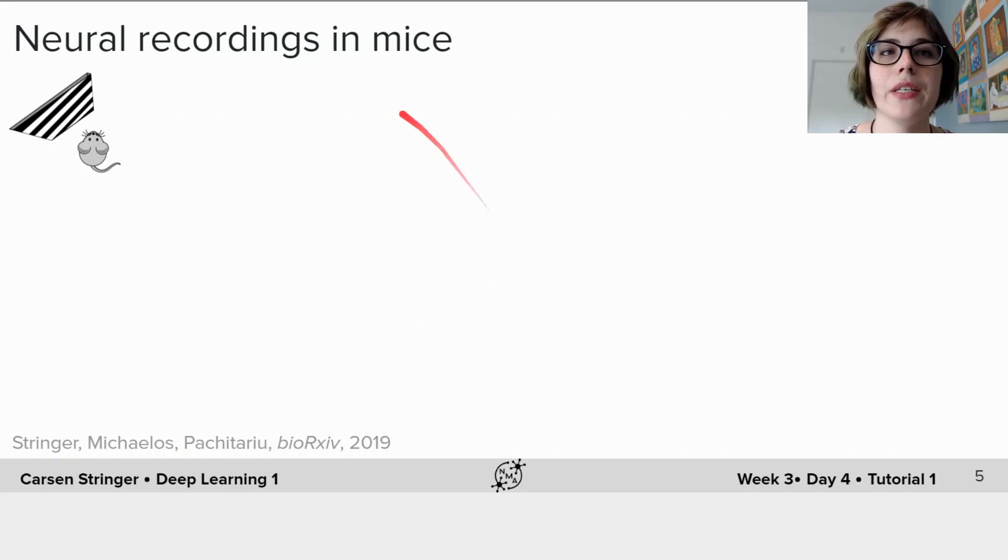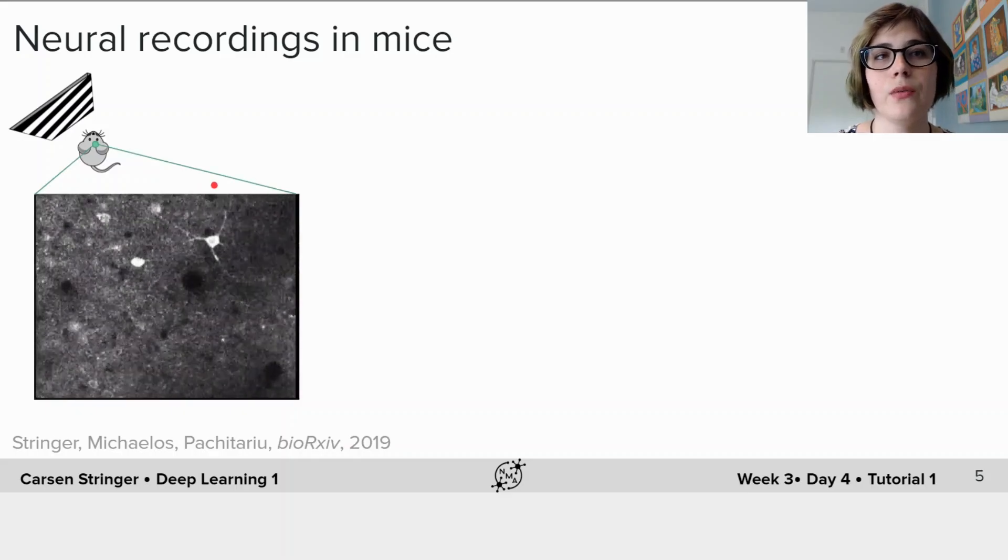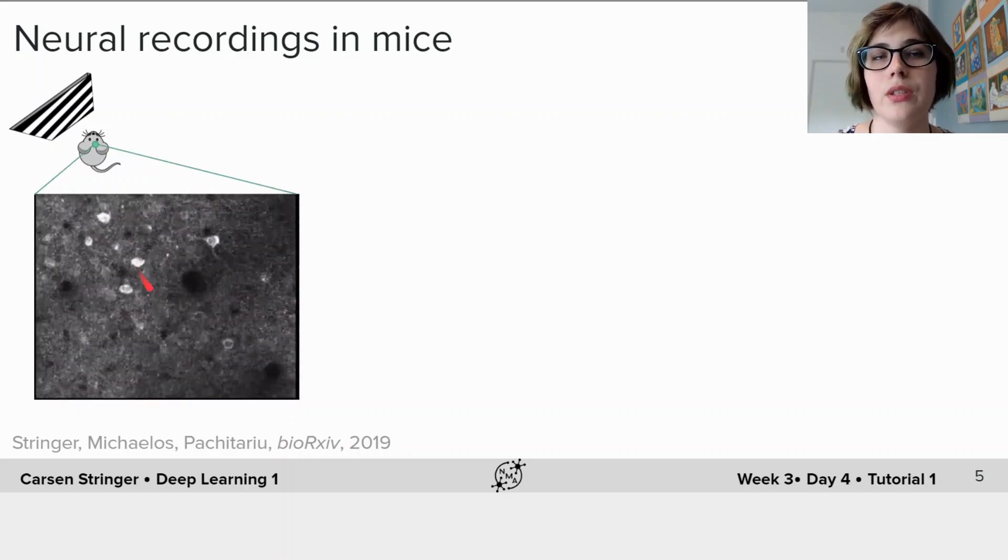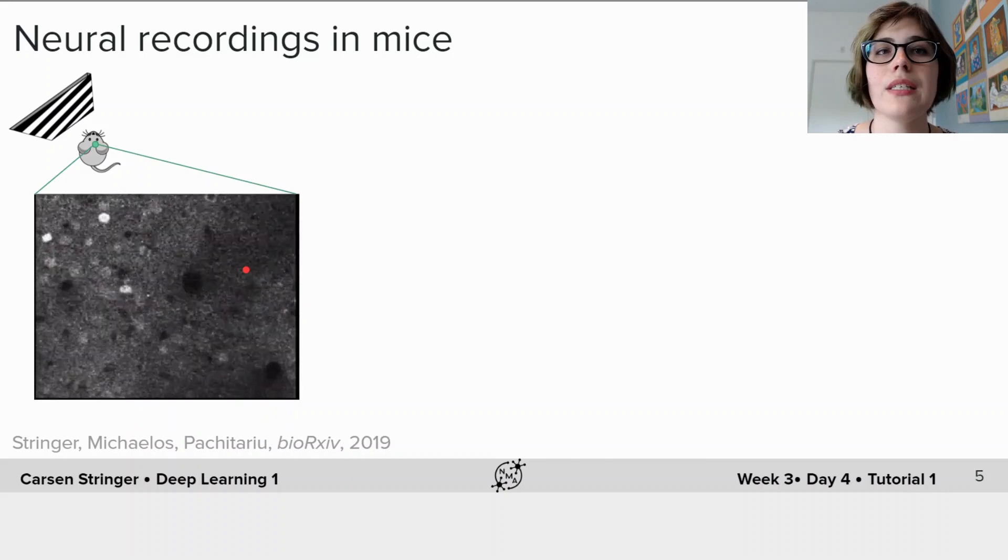In these tutorials, we will be exploring neural activity in mice while the mice are viewing oriented grating stimuli on a screen in front of it. We record this neural activity using a technique called two-photon calcium imaging, which allows us to record many thousands of neurons simultaneously. These neurons light up when they fire.